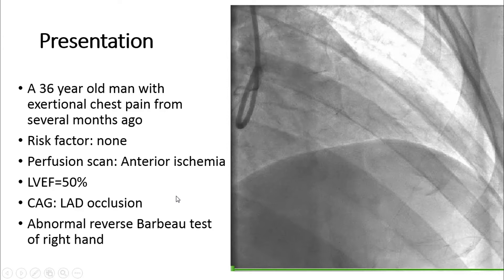On his physical examination, he had an abnormal reverse parabola test of the right hand, so we could not use his right radial artery as an access site.